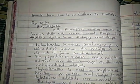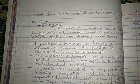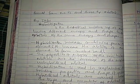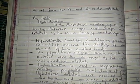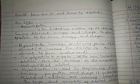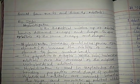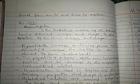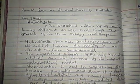By definition, hybridization is the theoretical mixing of orbitals having different energy and shape to obtain orbitals of the same energy and shape. For example, 2s orbitals have different energy and shape from 2p orbitals; however, hybridization makes them have the same energy and the same shape.